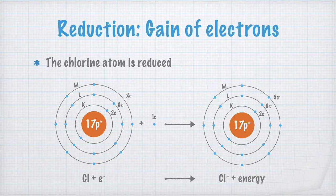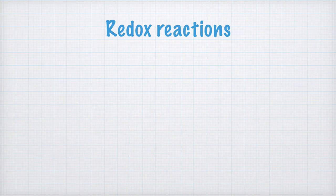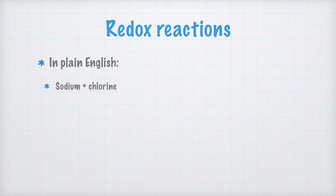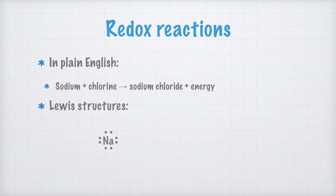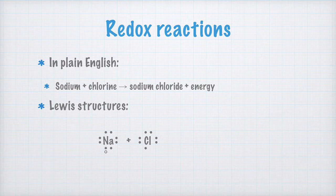Let's summarize by writing down the redox reaction between sodium and chlorine gas. First, a word formula: sodium plus chlorine gas becomes sodium chloride, and a lot of energy is released. Now let's write this with electron formulas, or Lewis structures. You usually draw only the valence electrons, but for the sodium atom here I draw both the single valence electron and the electrons in the shell inside it. The chlorine atom has 7 valence electrons, drawn right here.